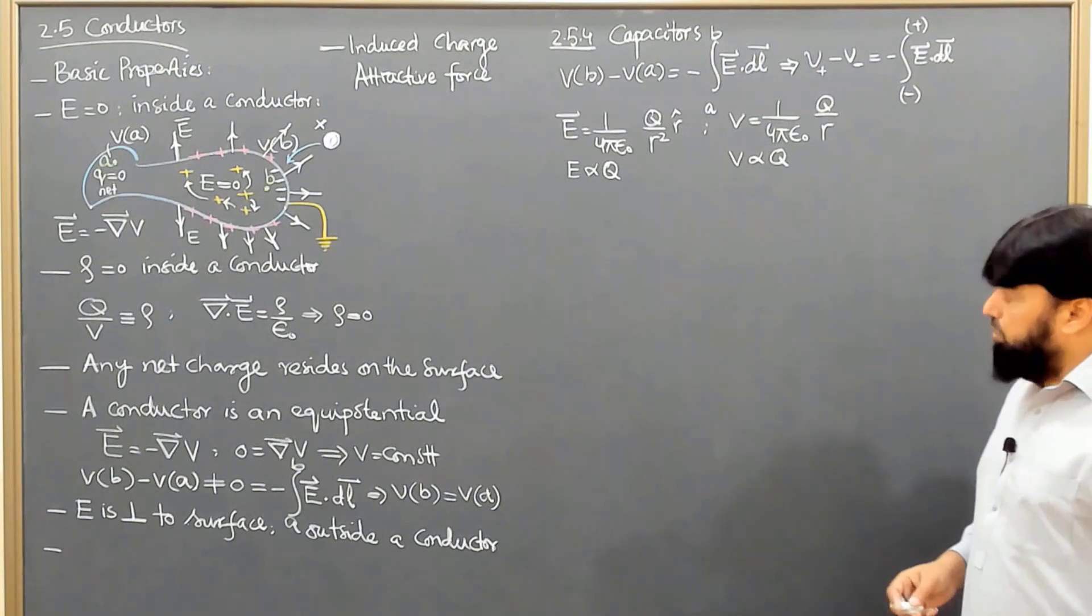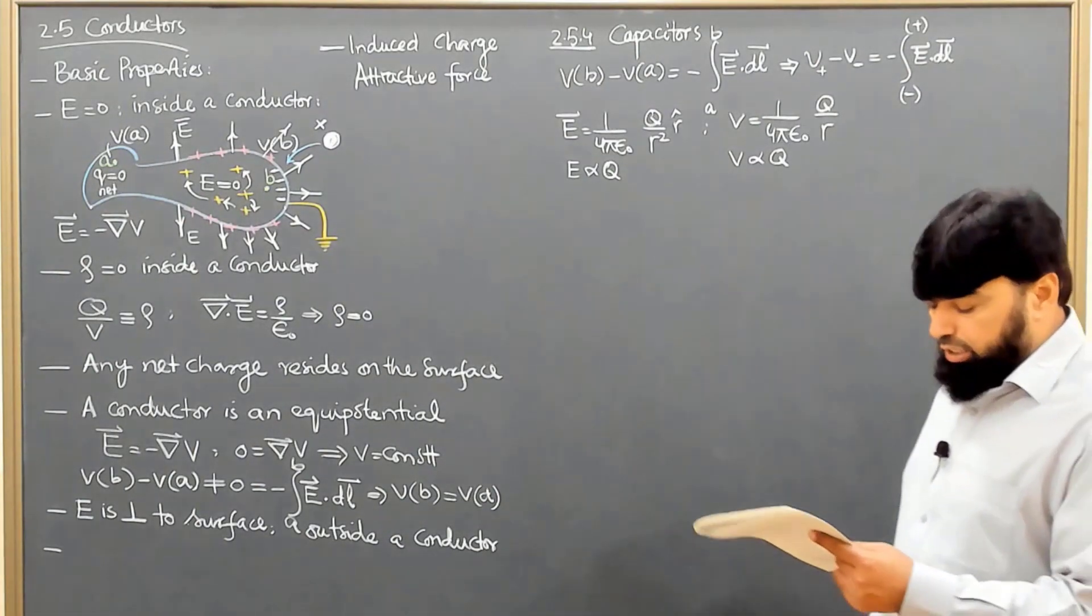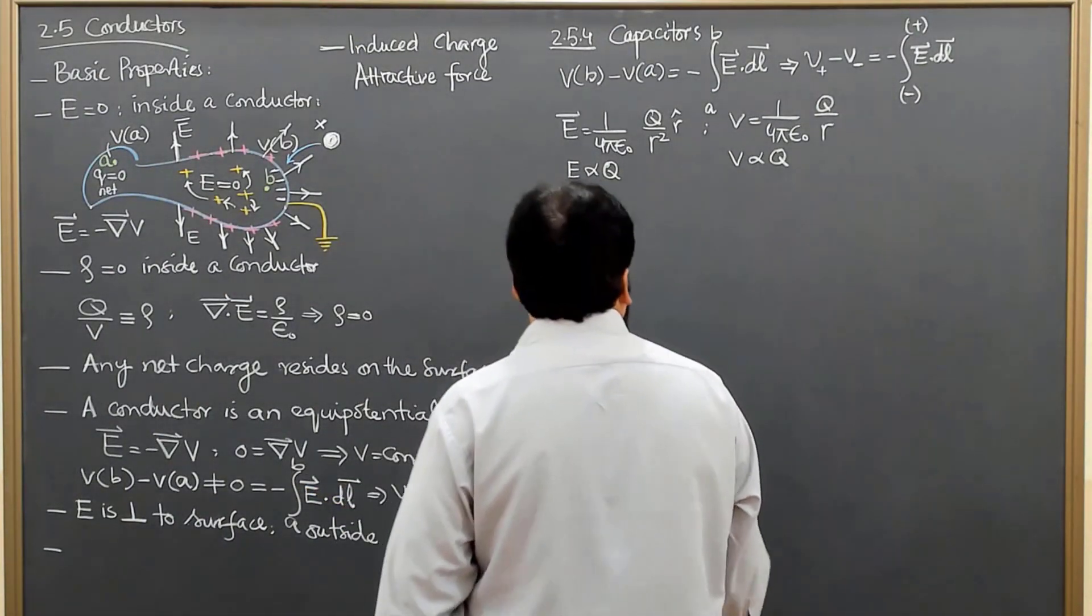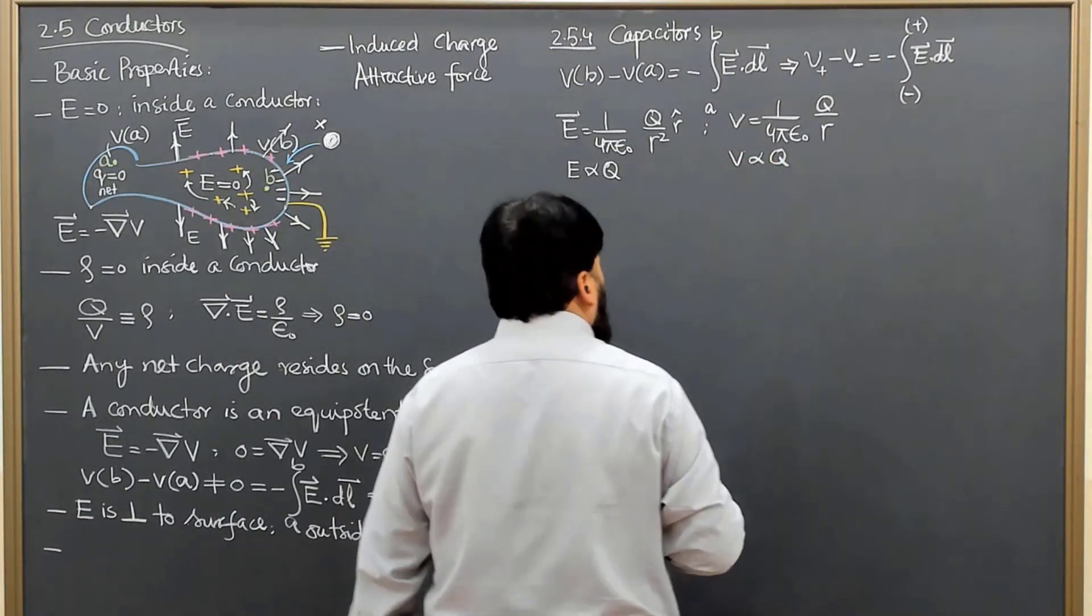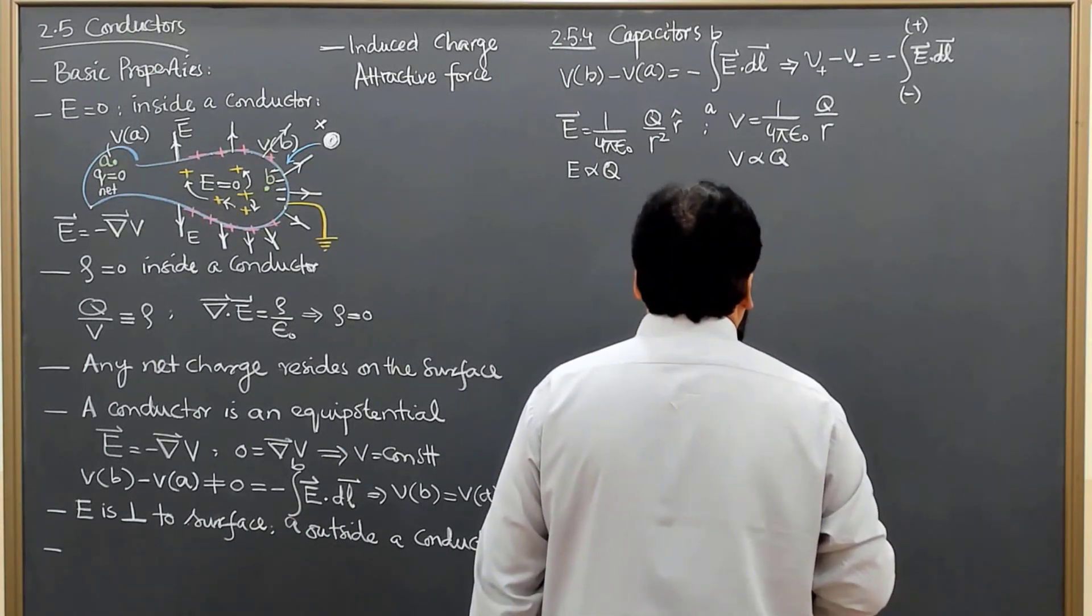The constant of proportionality, which we call the capacitance, is equal to the ratio where V is proportional to Q.